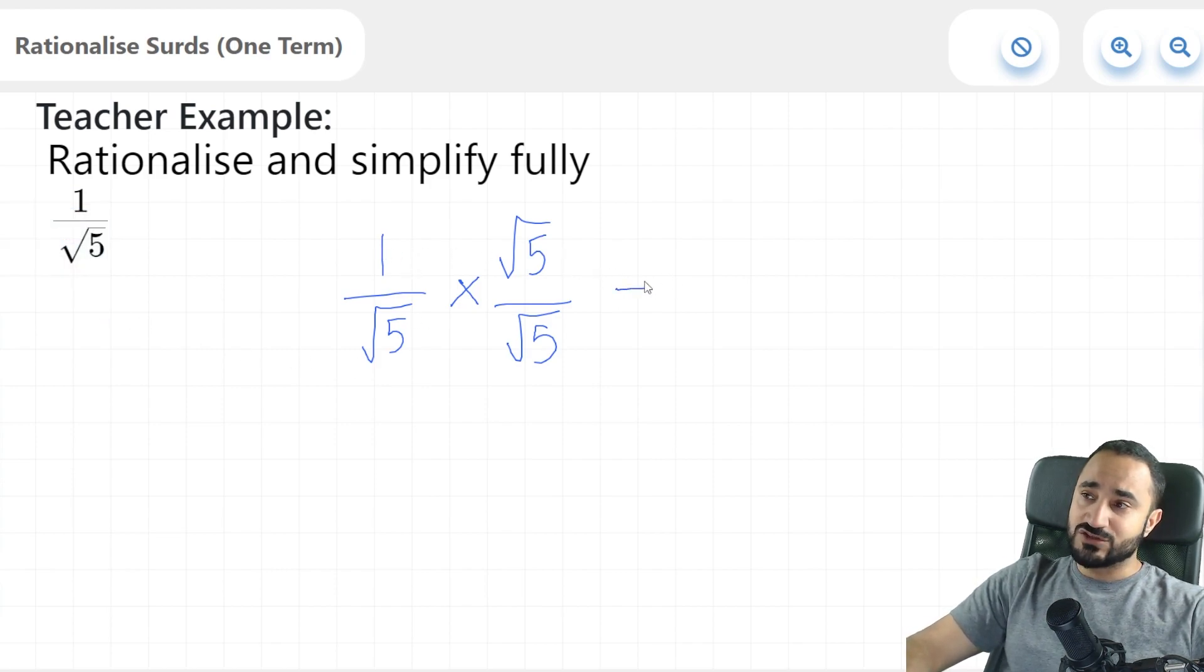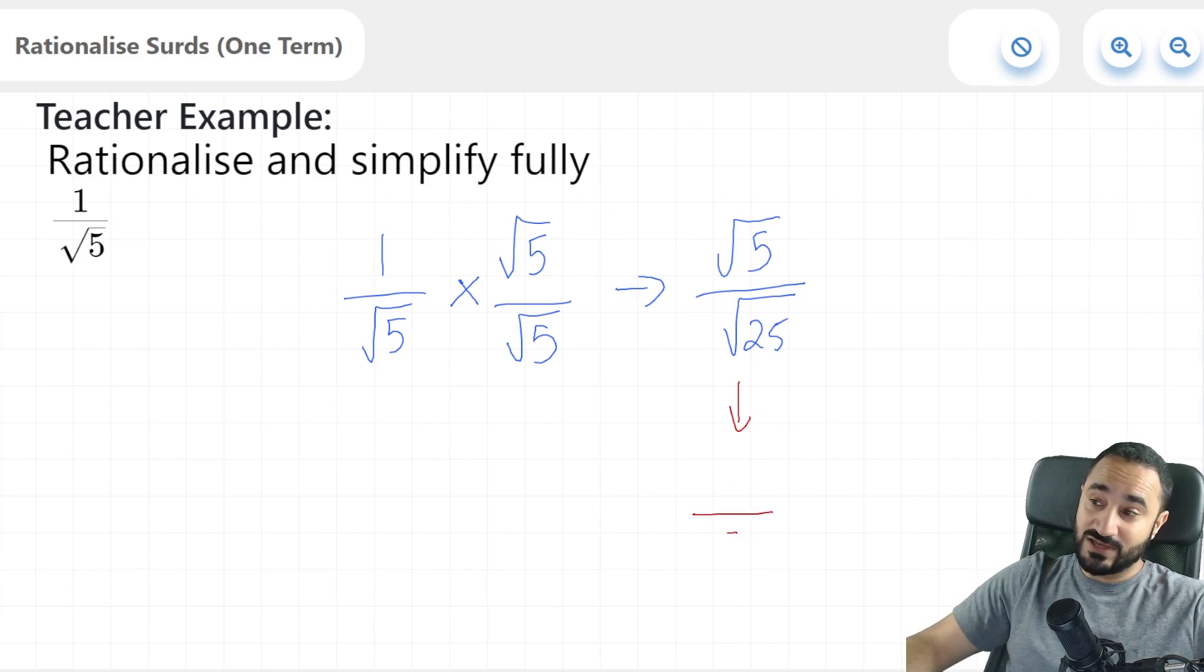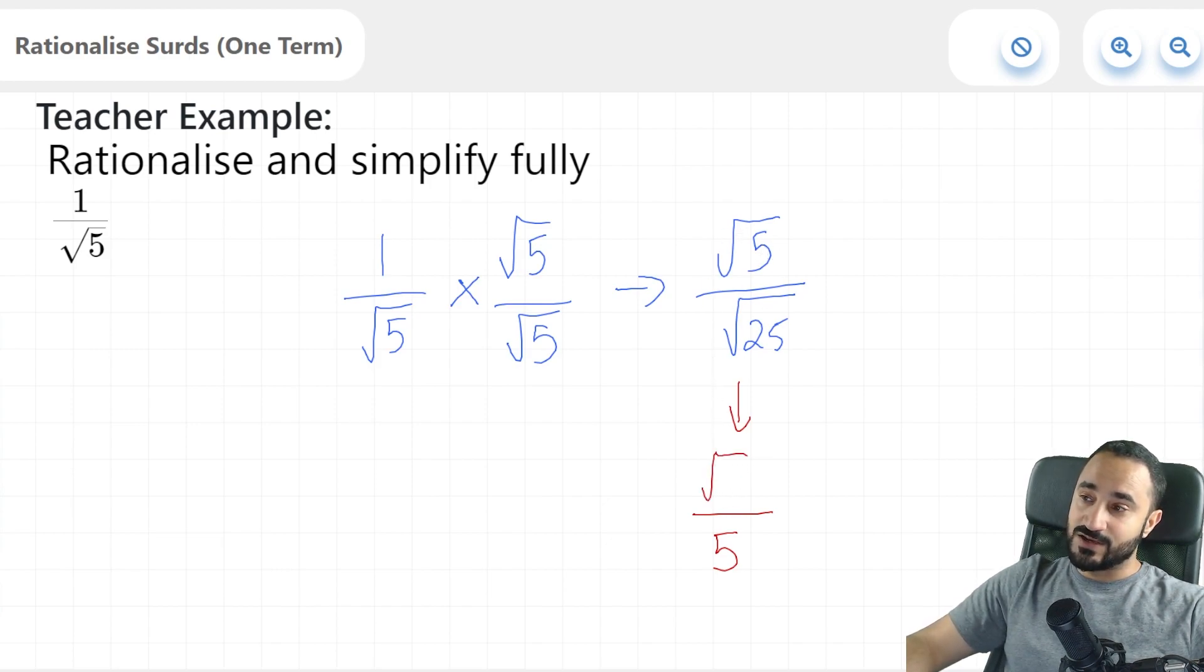And what does this give us? Well, 1 times root 5 is going to give us root 5. And root 5 times root 5 is going to give us root 25. And we can break this down further. The denominator here, the square root of 25, can actually be written as a rational number. The square root of 25 is indeed 5. And the numerator stays as it is, root 5.